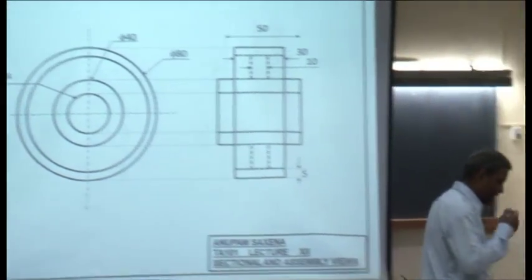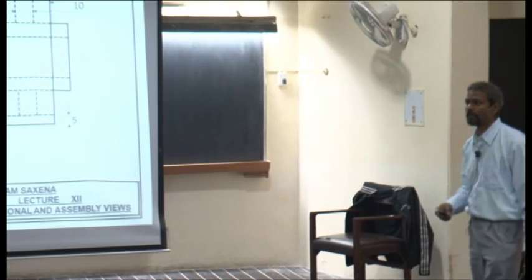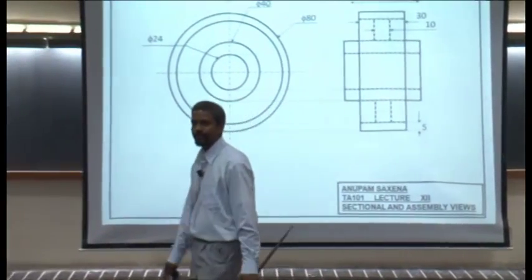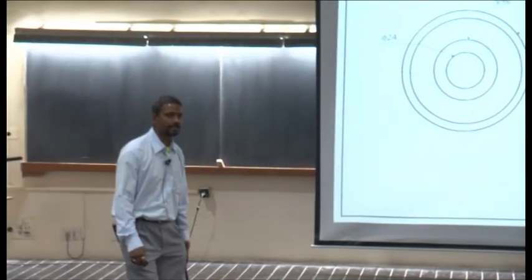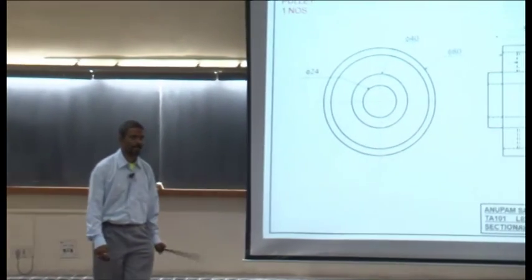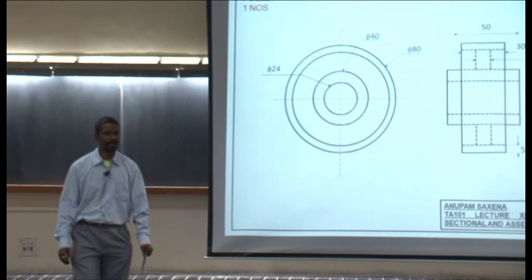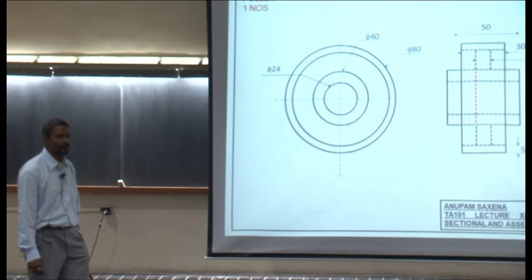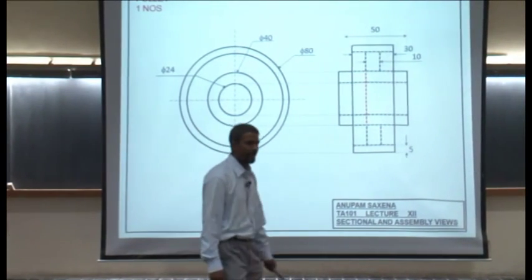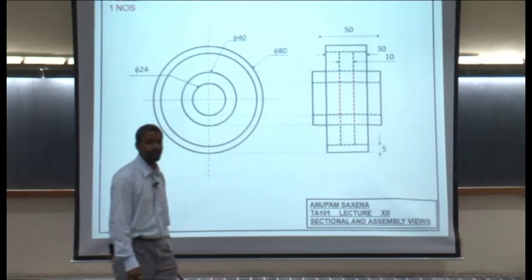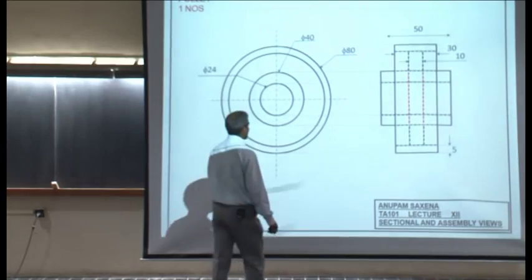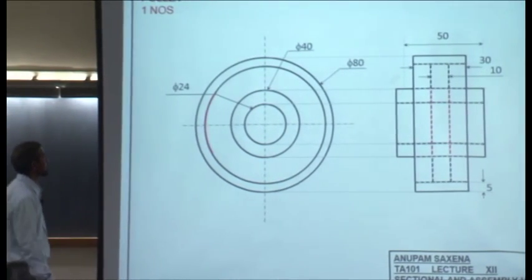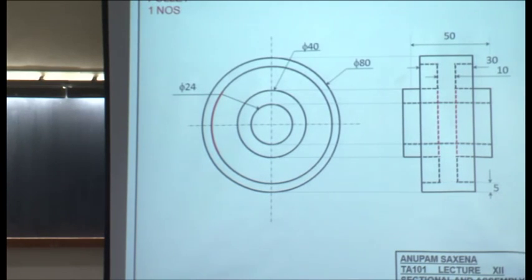In question 6.3, look at the right-hand side view of this wheel or roller or pulley and see if there are any mistakes on the right-hand side. What is there that should not be there, and what is missing? These two elements should not be there — they should not be there.